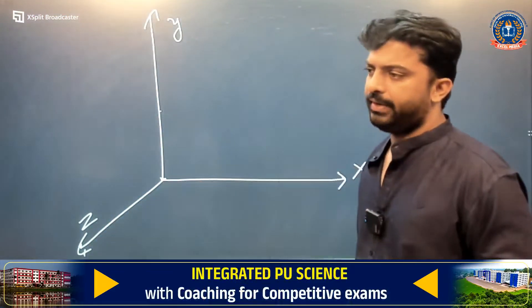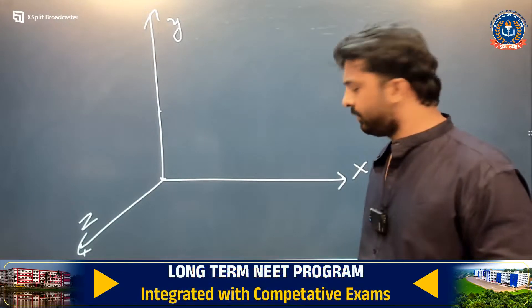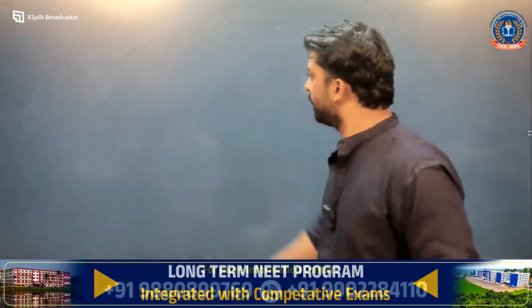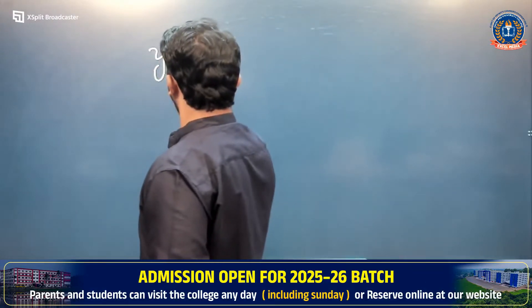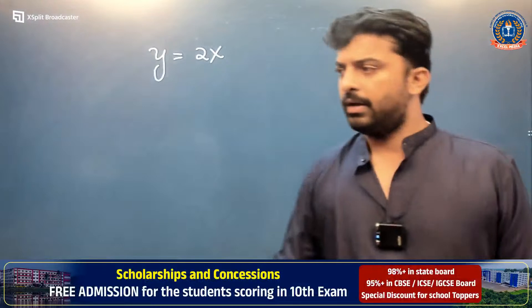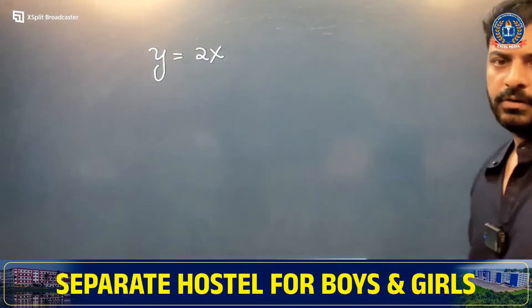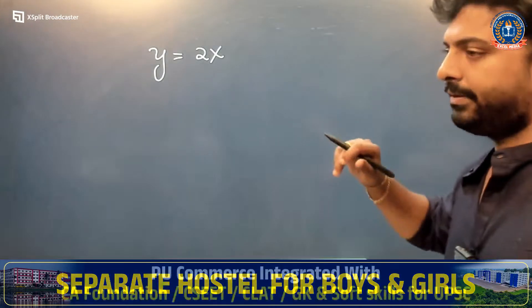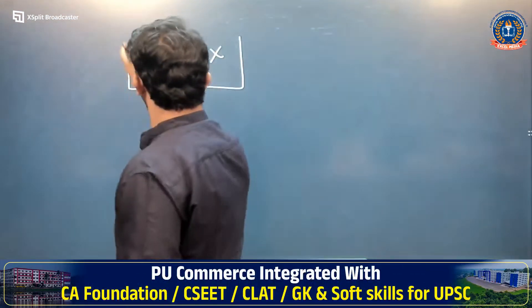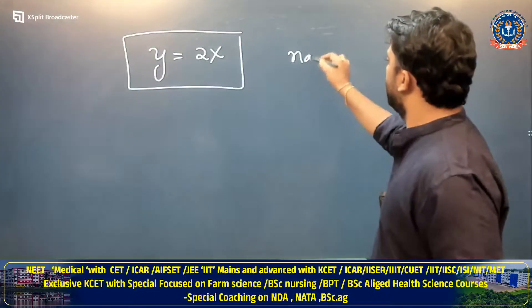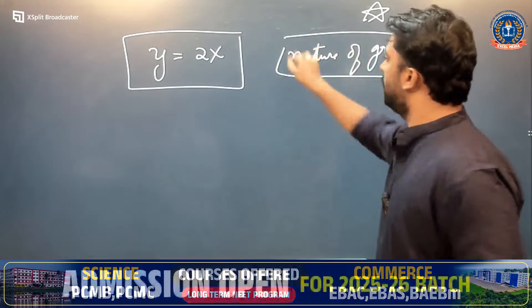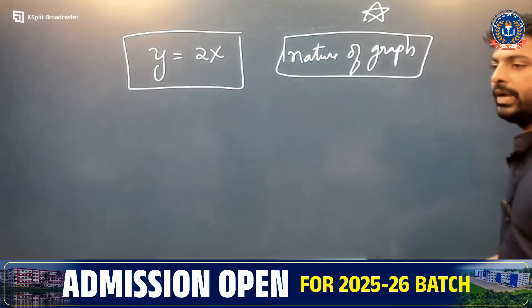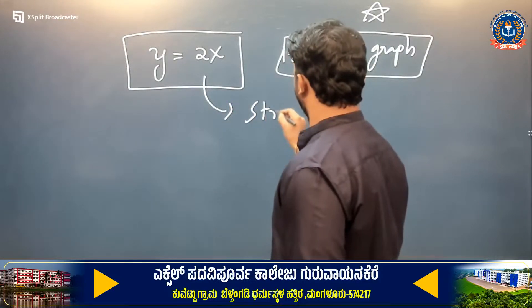Have you plotted any graph? If you have an equation like y is equal to 2x, what is the type of graph? Whether it is a curve or is it a straight line? The nature of the graph is an important topic you should know in physics. Y is equal to 2x — the type will be a straight line.